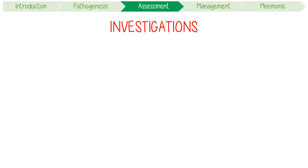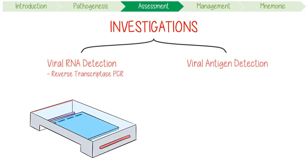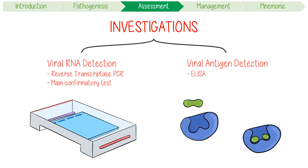For investigations, you only have two options to diagnose it: viral RNA detection or viral antigen detection. A positive reverse transcriptase PCR from blood or an oral swab is the main confirmatory test. Alternatively, you can test for its antigen using ELISA, although this is rarely used.